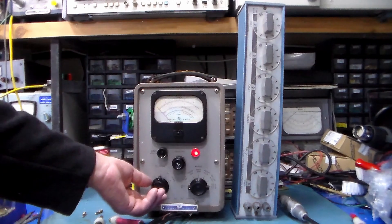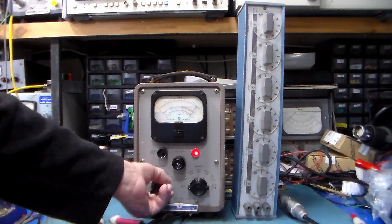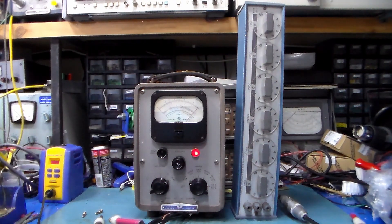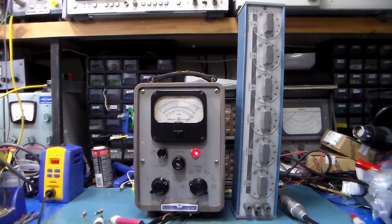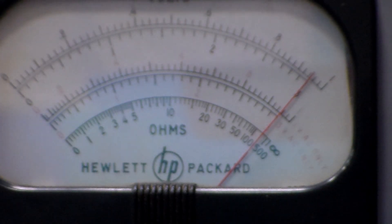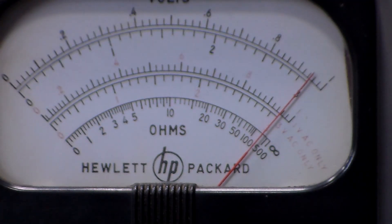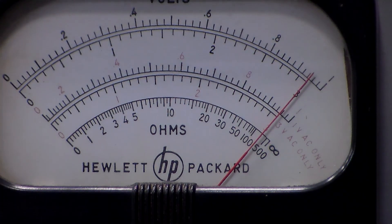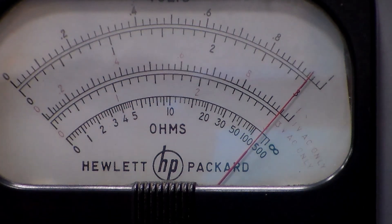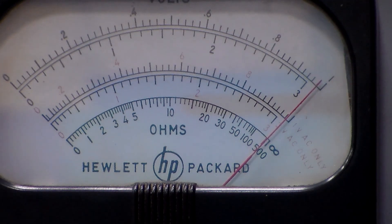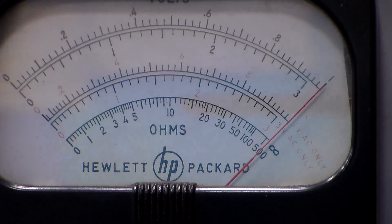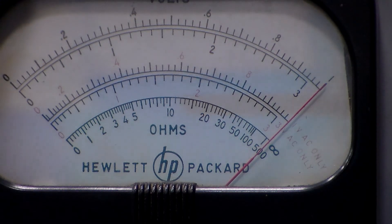We set to the ohms range and set to R times 10. You'll see that we're not reading infinity. We actually have to read infinity for that, so we set the ohms adjust so that we can read infinity. We just set that fairly closely. I'm doing this through the camera so I have to just check by eye. That looks pretty good.